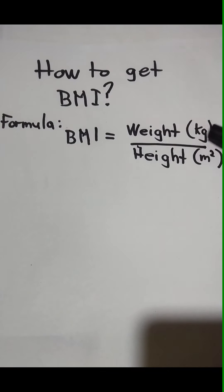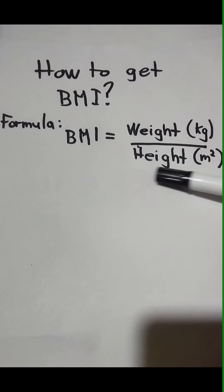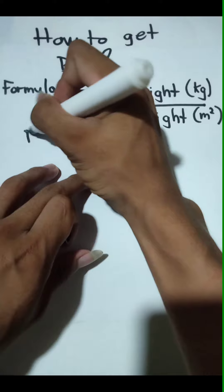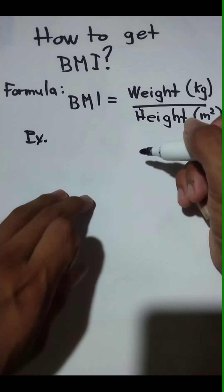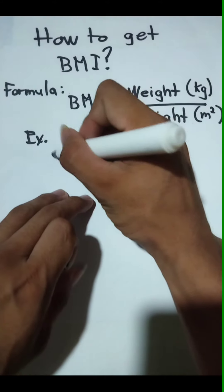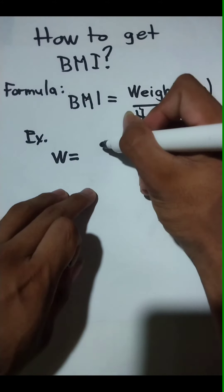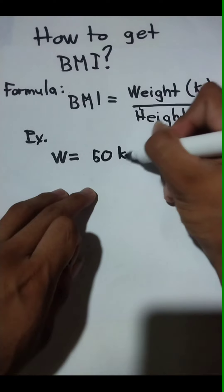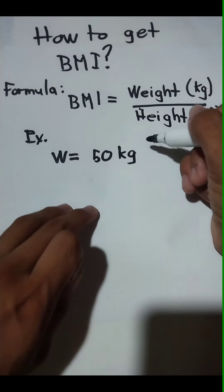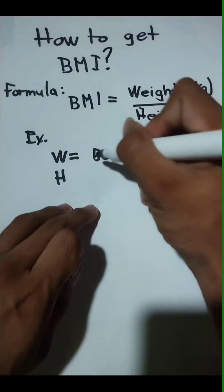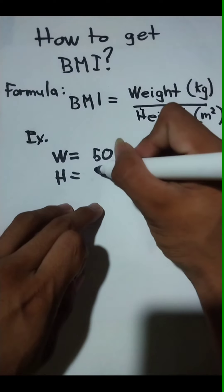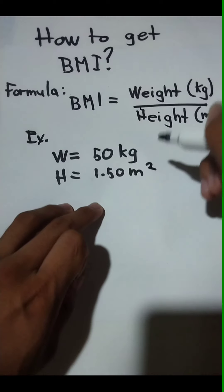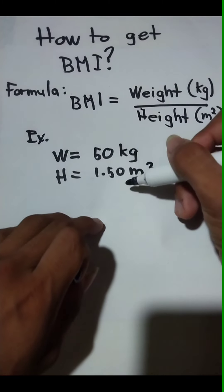So the formula for getting the BMI is weight in kilograms over height in meters squared. Let's make an example. Weight is equal to 50 kg, which is my weight, and height is equal to 1.50 meters squared.